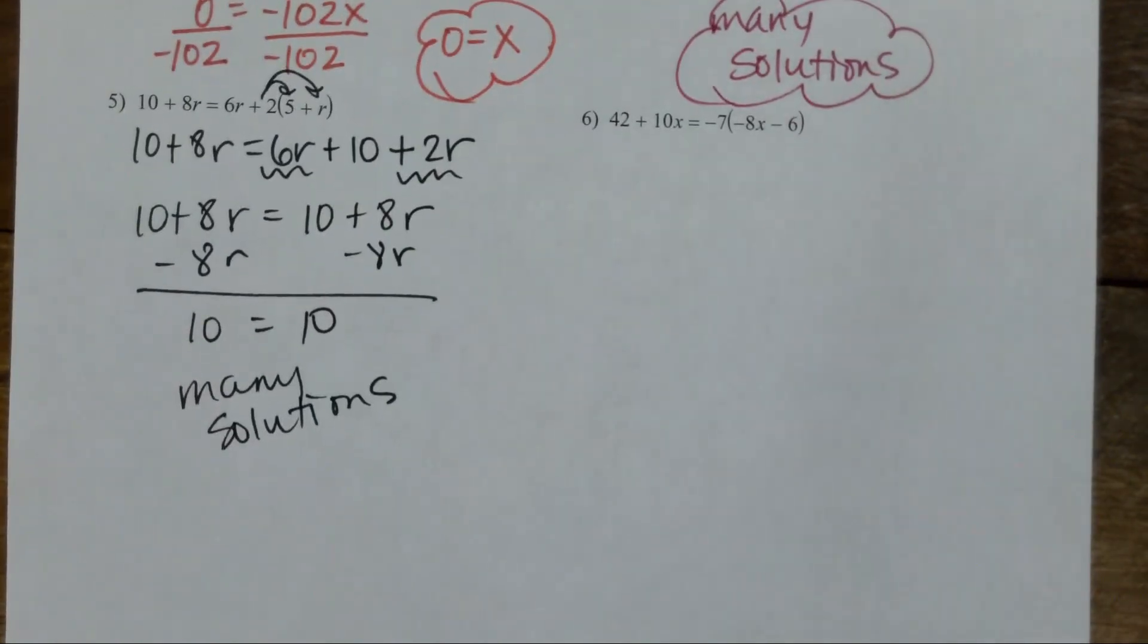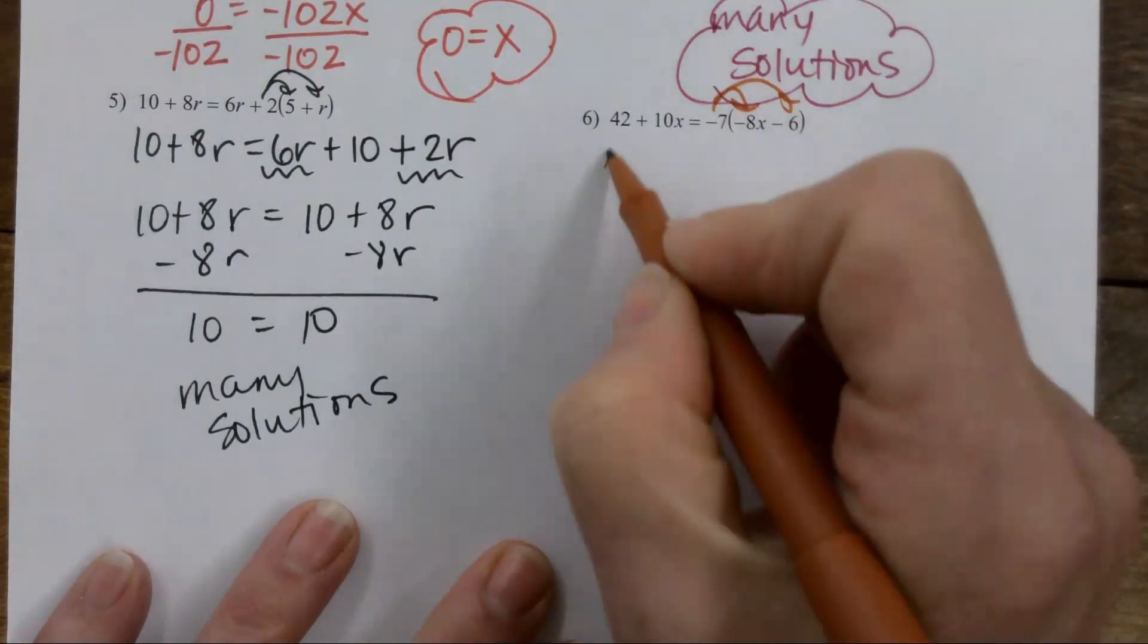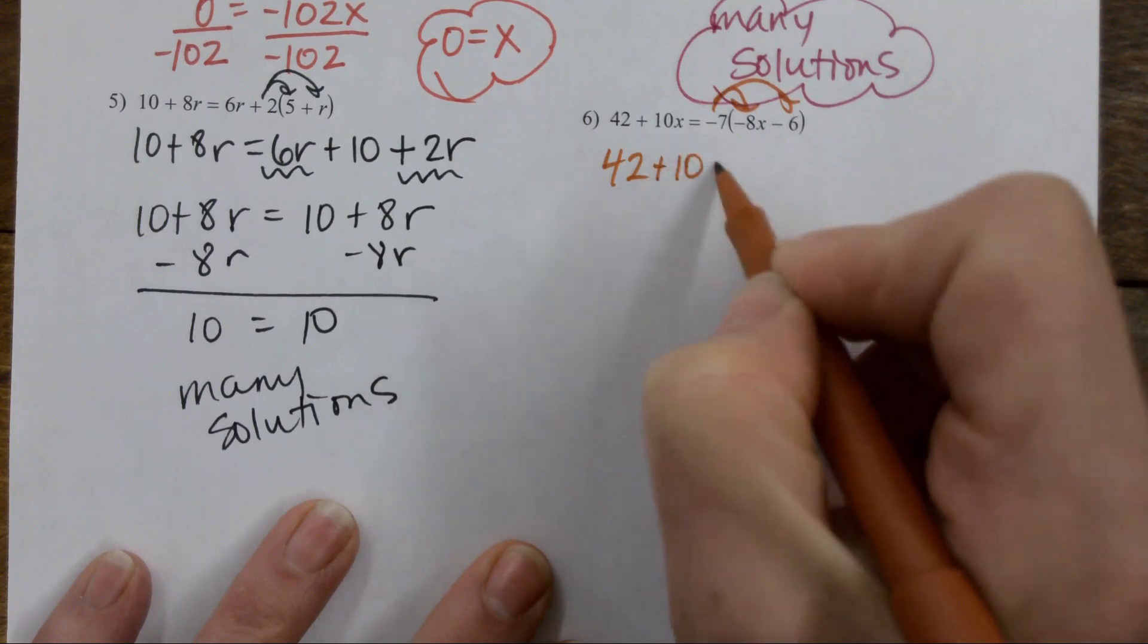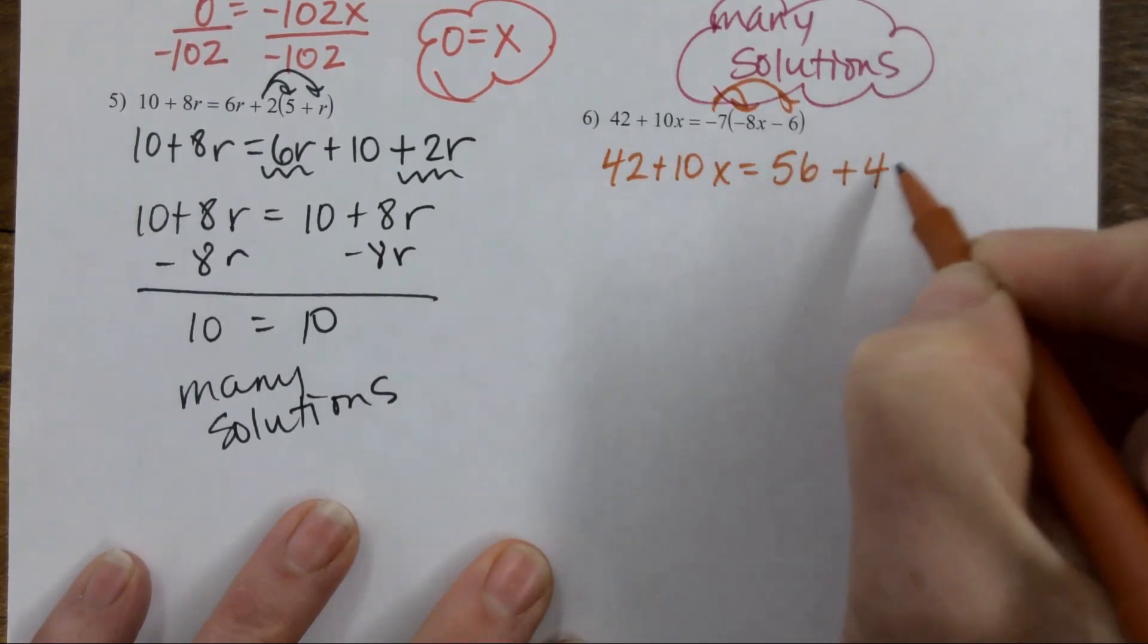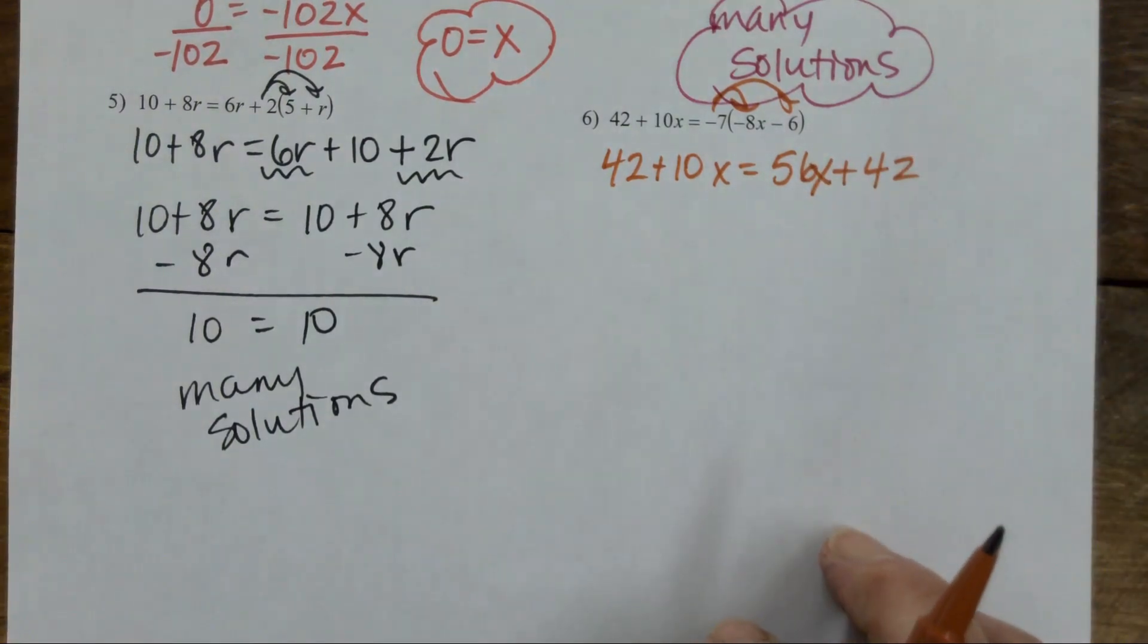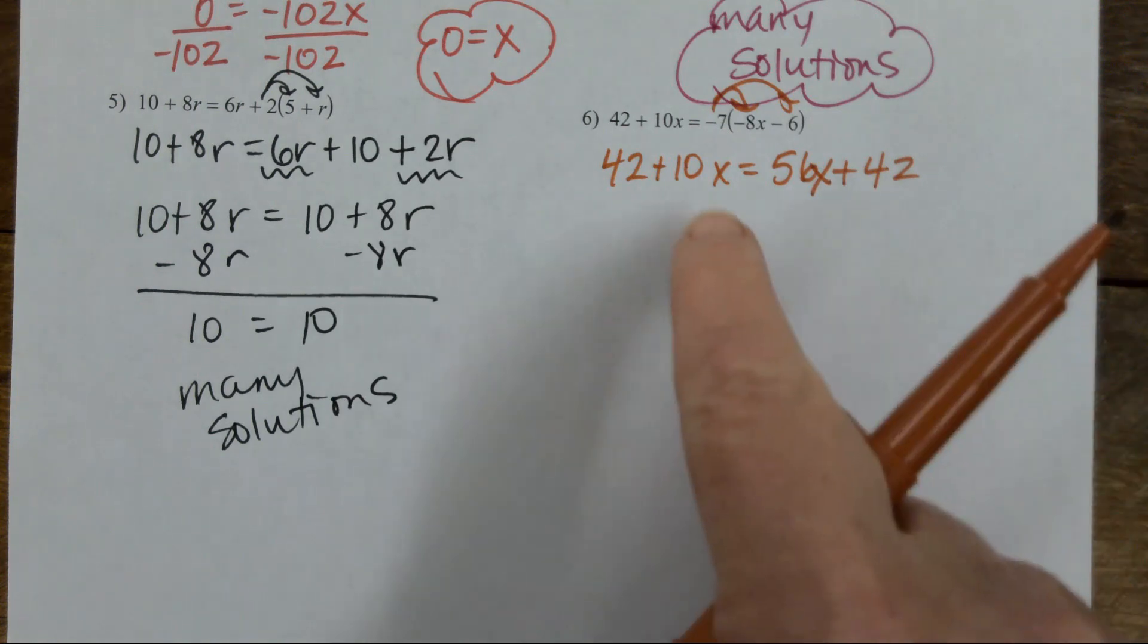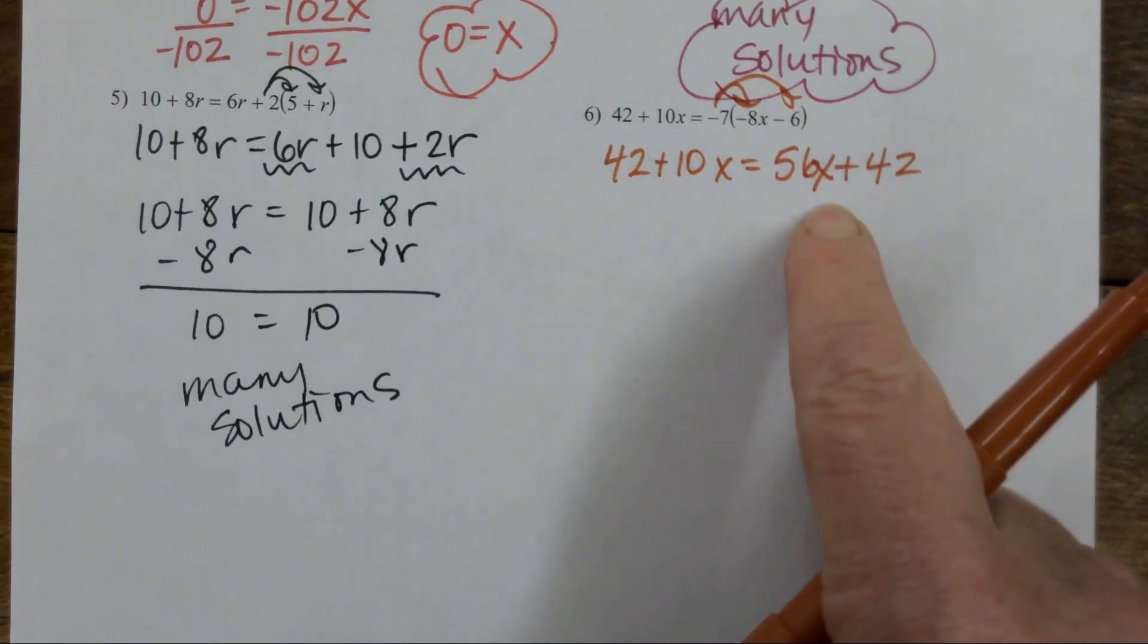Last one together, then you're on your own. Tell me what I do first. Distribute. All of these have distributed. What's my next move? Get rid of one of the variables. I can either subtract 10x or subtract 56x. Do we have a preference? Go ahead. You're going to get rid of 10. Yeah, that's how I usually do it too. 42 equals 46x plus 42.